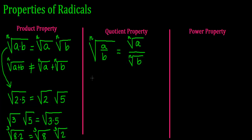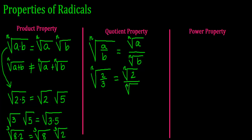Let's give you an example. If I have the nth root of 2 thirds, I can separate these two into their own radical — the nth root of 2 over the nth root of 3.